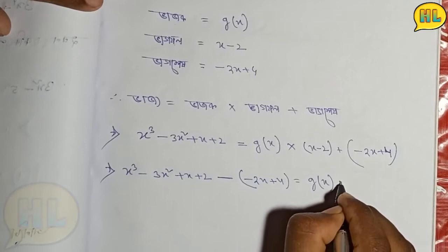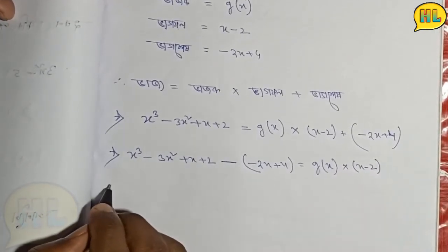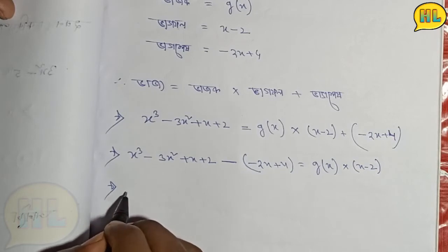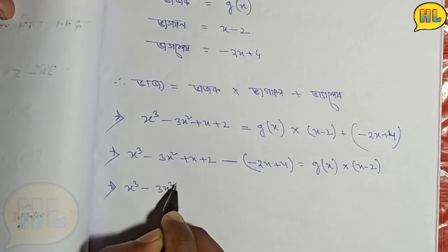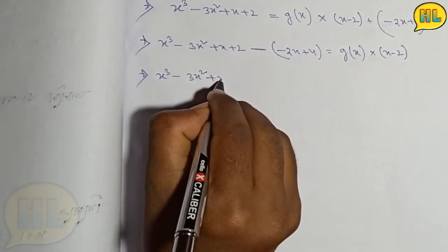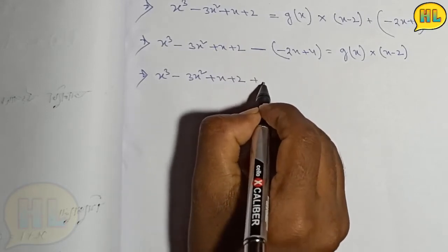g(x) times x minus 2 equals x cube minus 3x square plus x plus 2 minus, plus.